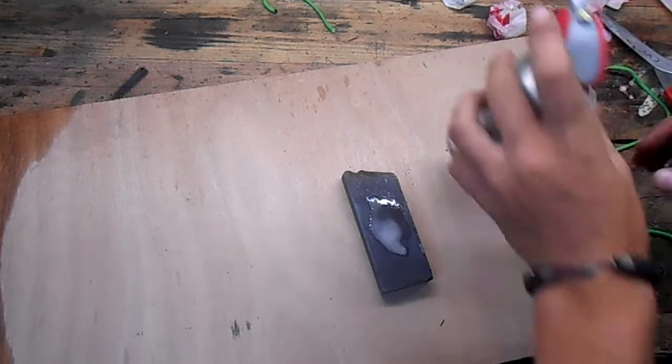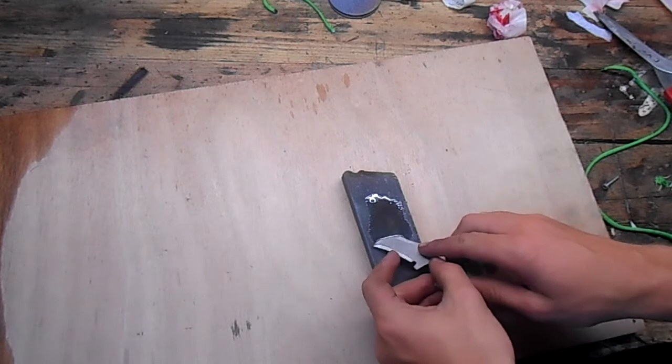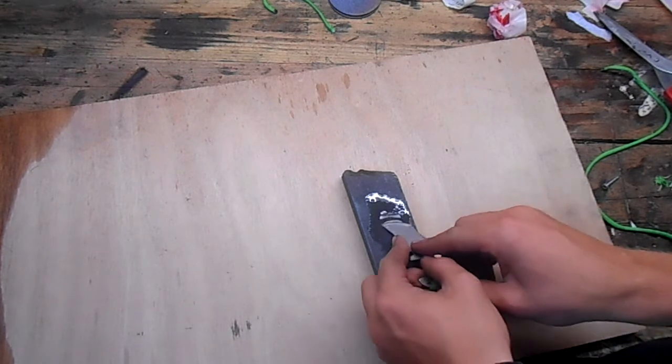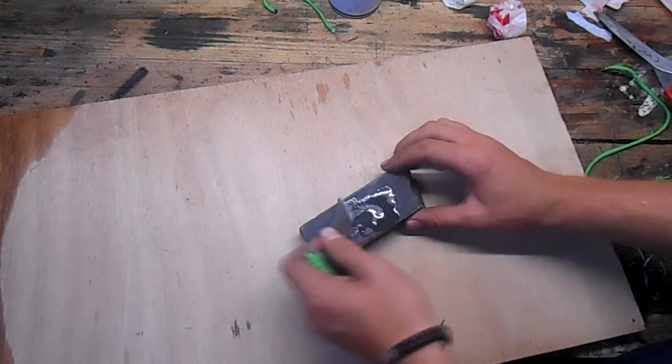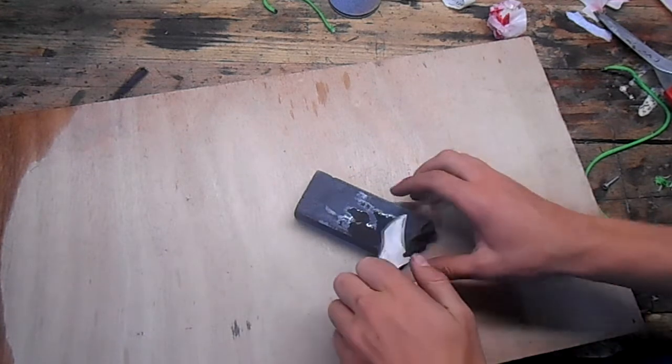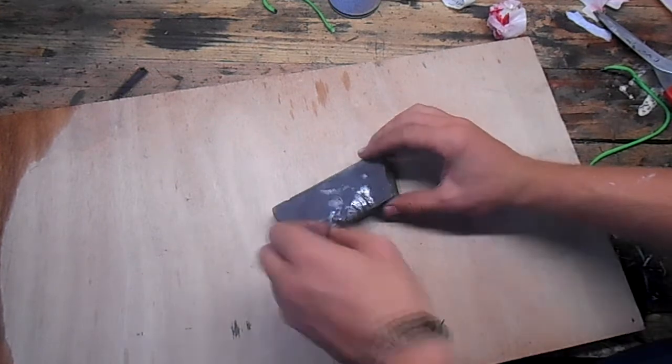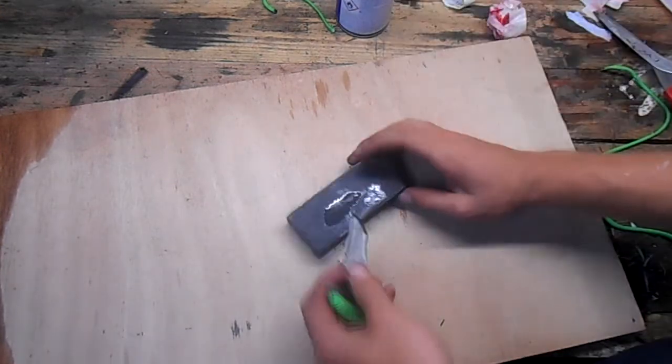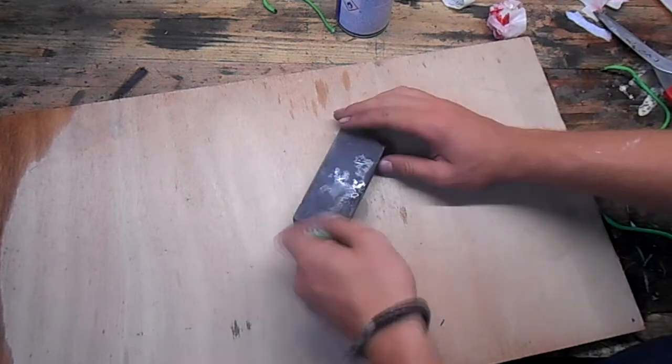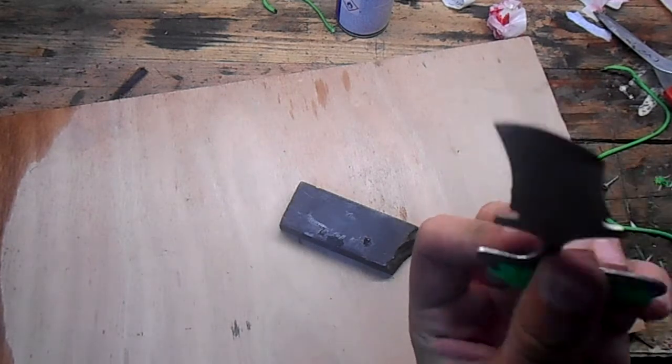So I'm just going to spray some WD-40 on the whetstone and you're going to make this motion, and just as many times on the other side of course. And like that, you've got a really sharp knife.